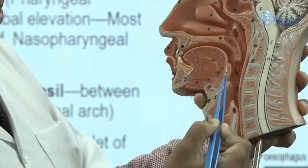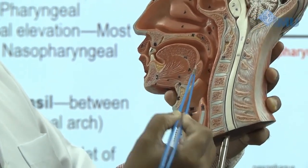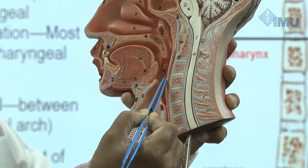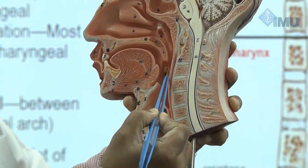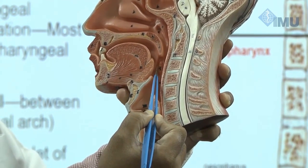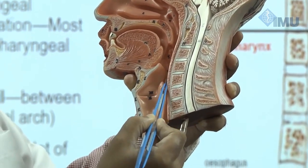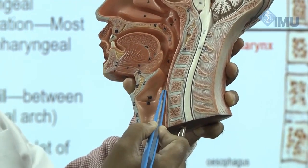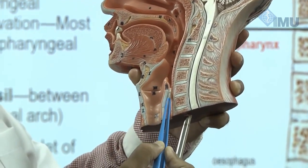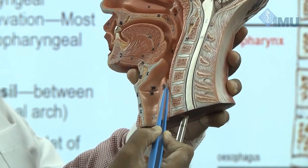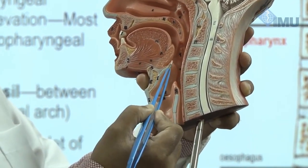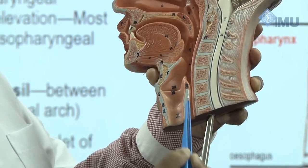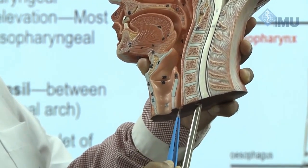On the lateral wall of the oropharynx is the tonsil. There are two arches: the palatoglossal arch and the palatopharyngeal arch. In between the palatoglossal and palatopharyngeal arch you can find the palatine tonsil. The laryngopharynx is the last part, which enters into the esophagus. It starts from the epiglottis and ends at the lower border of the cricoid cartilage, where the laryngopharynx continues into the esophagus.